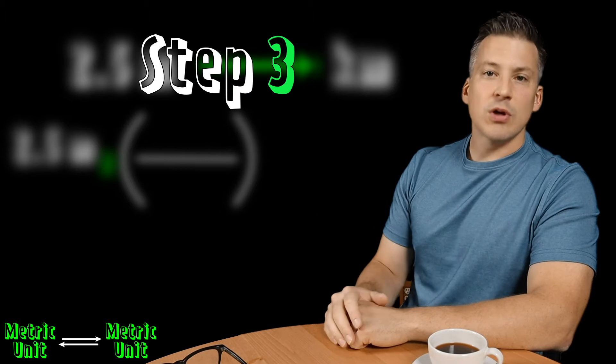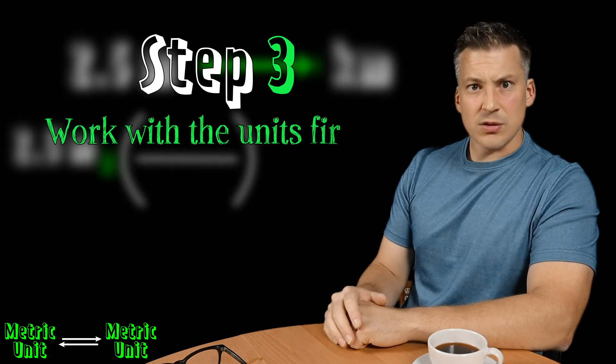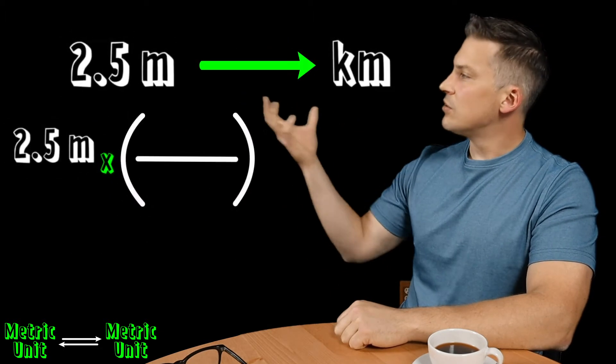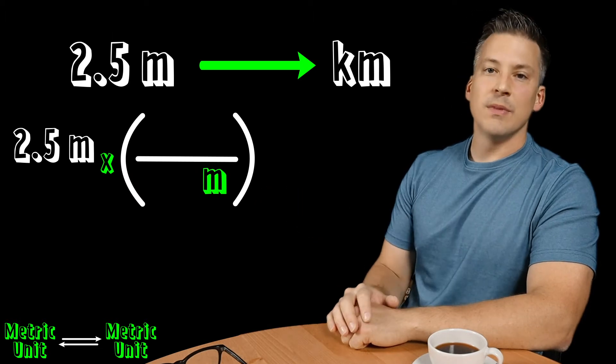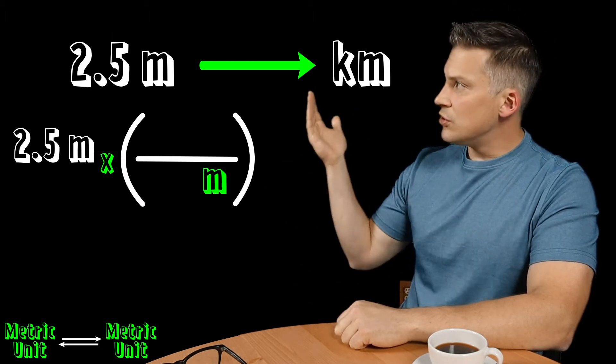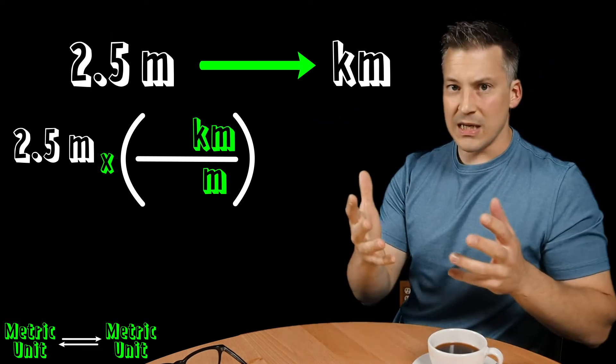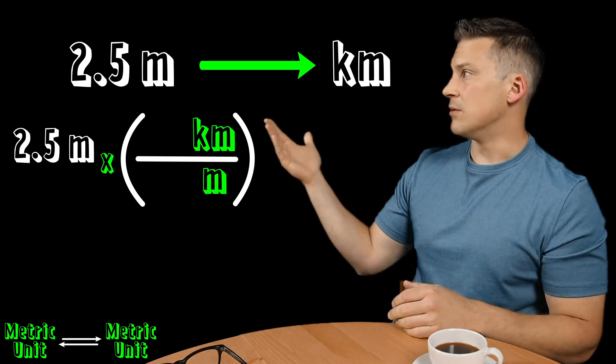Step number three then is what we're going to do is we like to work with the units first. So what we want to do is we want to place the units we want to cancel on the bottom and the units we want to convert to on the top. So in this case we want to cancel the unit of meters because we don't want our answer in meters.